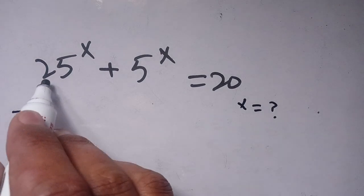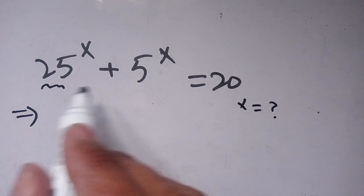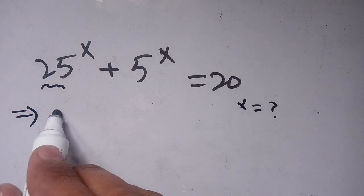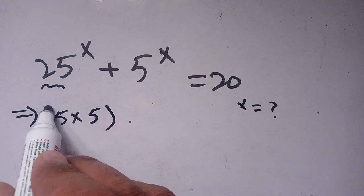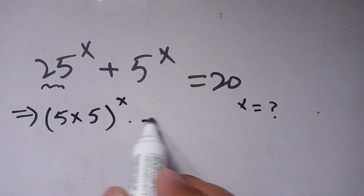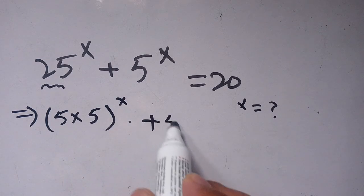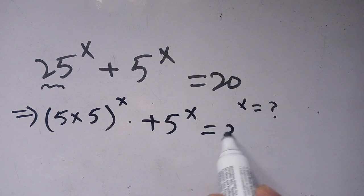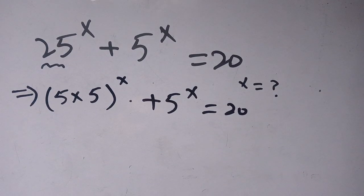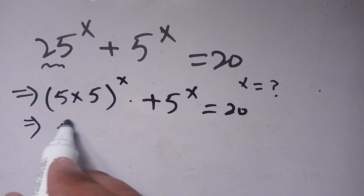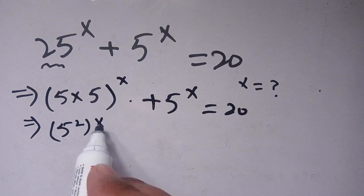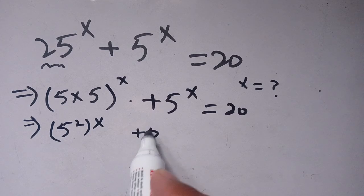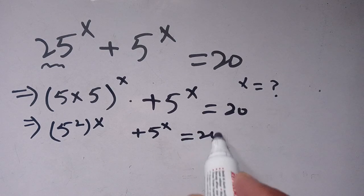First of all we can convert 25 in terms of 5. We can write it as 5 times 5, so it becomes (5 times 5) bracket power x plus 5 power x is equal to 20. We can write 5 times 5 as 5 power 2, so it becomes (5 power 2) bracket power x plus 5 power x is equal to 20.